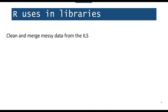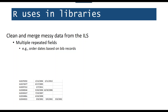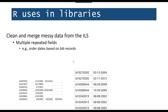To push you over the edge, I'll give you a few examples of the ways we've used R. One task is cleaning and merging messy data that comes out of the ILS. We have a lot of messy data from our ILS — a lot of it is not due to us but due to the way it's exported. One example: order dates are based on the bibliographic record and not the item record, which means the data looks all staggered and pretty much useless. Those rows can go on for 15 or 20 instances if that many copies were purchased. You can write scripts in R that clean that up.